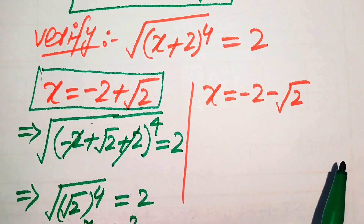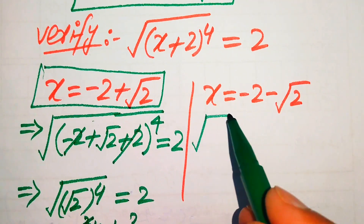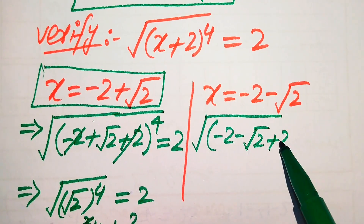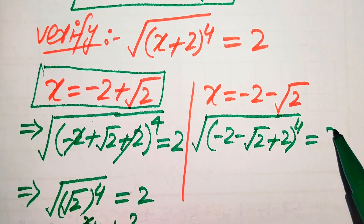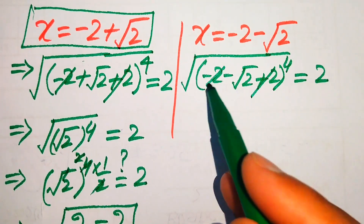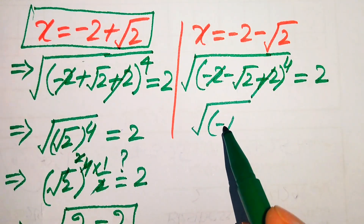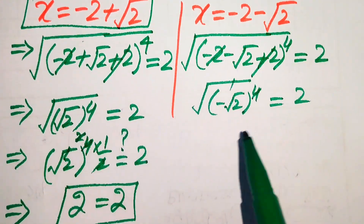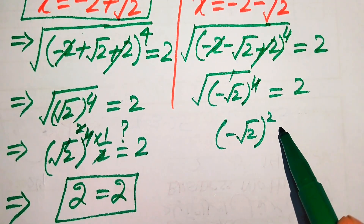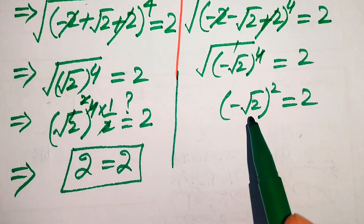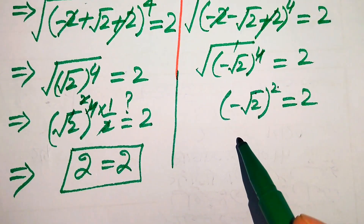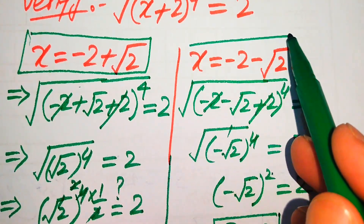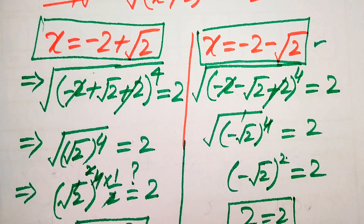Now we check the second value x = −2 − √2. Substituting: √((−2 − √2 + 2)^4) = √((−√2)^4). The −2 and +2 cancel, leaving (−√2)^(4 × 1/2) = (−√2)^2. The negative becomes positive and the square and square root cancel, giving 2 = 2. This shows the second value of x also satisfies the equation, so both are solutions. Thank you so much for watching.